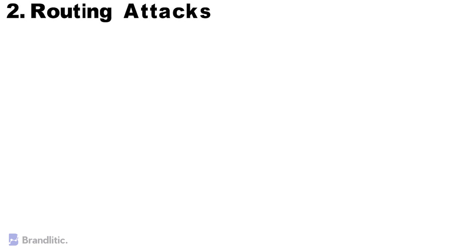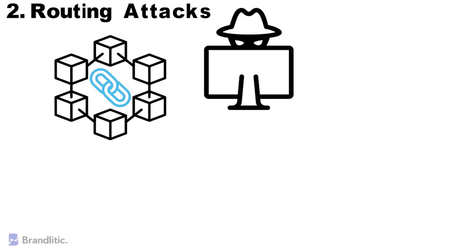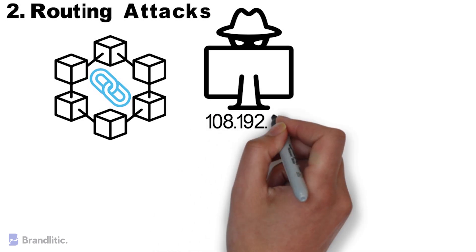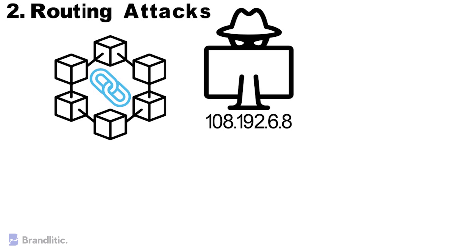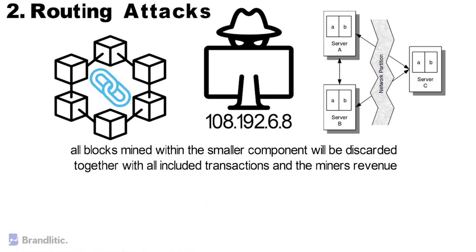Number two: routing attacks. Although blockchain nodes can run anywhere on earth, the nodes composing the network are far from being spread uniformly around the globe. Since all blockchain networks depend on massive volumes of real-time data transfer, an attacker only needs to intercept data during transmission to internet service providers. An attacker can use routing attacks to partition the network into two or more disjoint components, preventing nodes within a component from communicating with outside nodes, forcing the creation of forked blockchains.